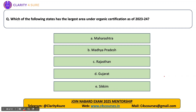Next question: which state has the largest area under organic certification as of 2023-2024? The state with the largest area is Madhya Pradesh. Note that the state which is the largest producer of organic products is Maharashtra. So the answer here is Madhya Pradesh.